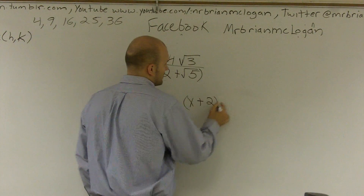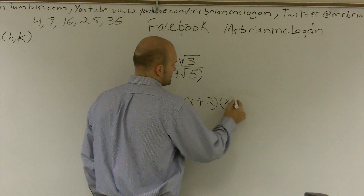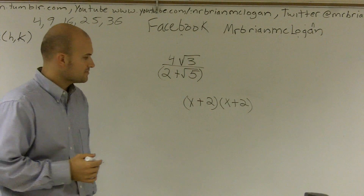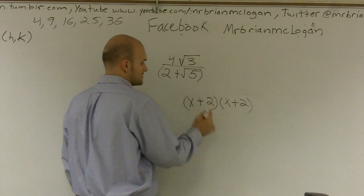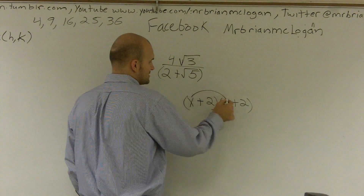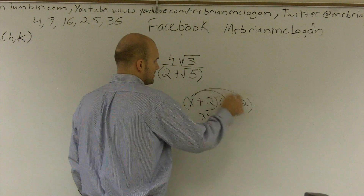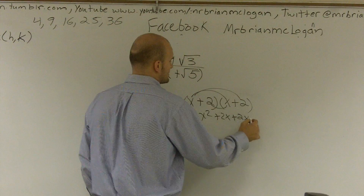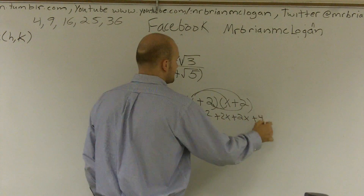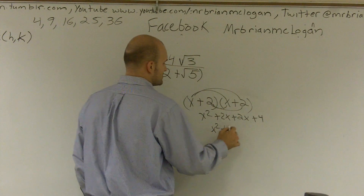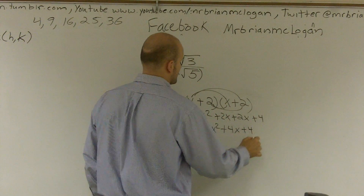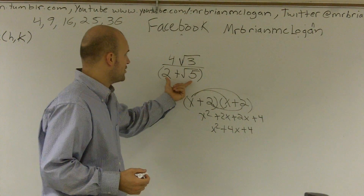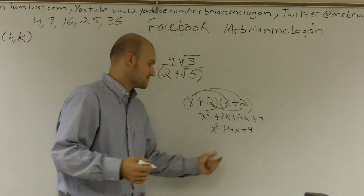Here's a quick little example: x plus 2 times x plus 2. We call it a perfect square because when you multiply it out, x times x gives you x squared, plus 2x, plus 2x, plus 4, which gives you x squared plus 4x plus 4. So if I was going to multiply by this exact same binomial, I'm going to get three terms.